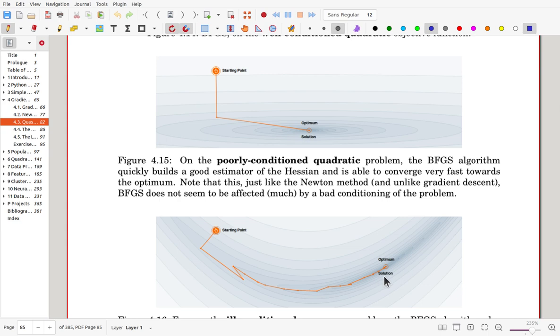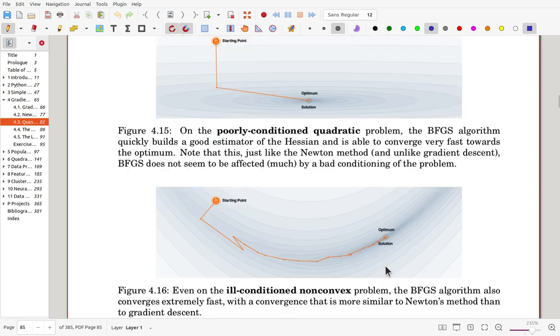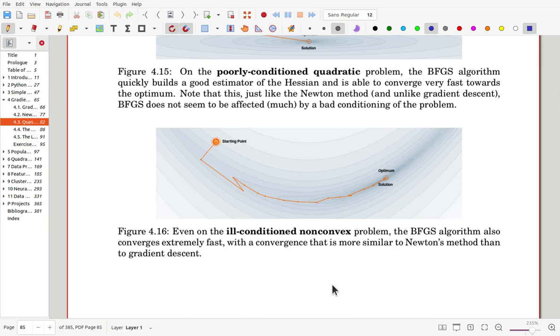Now in this lecture note, we try to show the performance of various algorithms. Now this BFGS algorithm is the first algorithm so far to locate the minimizer. Here, in most cases, the BFGS algorithm converges quite fast with a convergence that is more similar to Newton's method than to the gradient descent method.